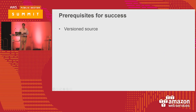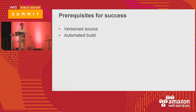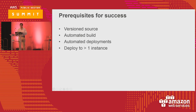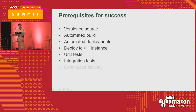Some prerequisites for success: version control at minimum on your dev. Then automated build. Maybe most will do some kind of unit testing — not on a developer environment but on your build process. Then the automated deployments — one instance or a group of instances — then do unit testing and integration testing, meaning involving other pieces of the software, other parts of the services. Then continuous delivery and how that can be deployed in a continuous manner.